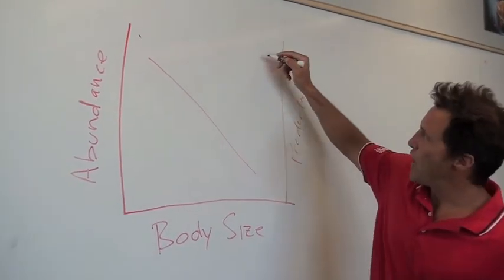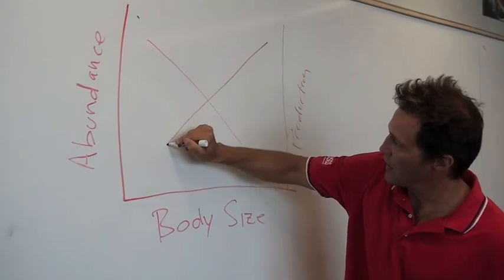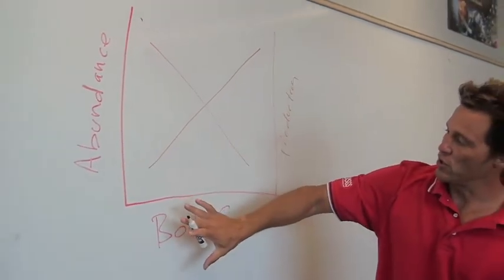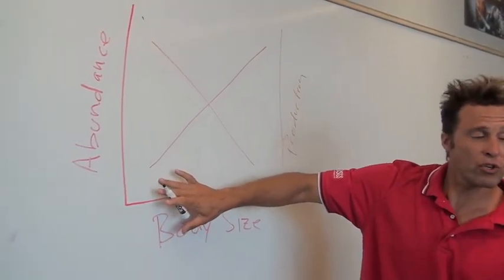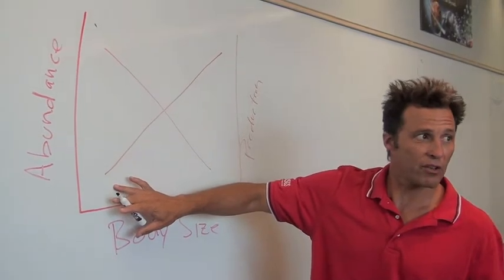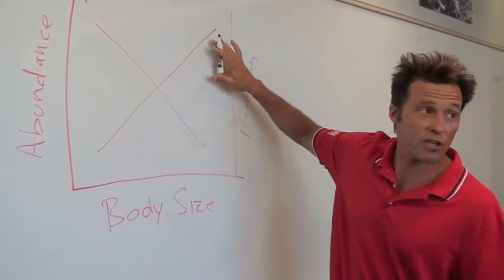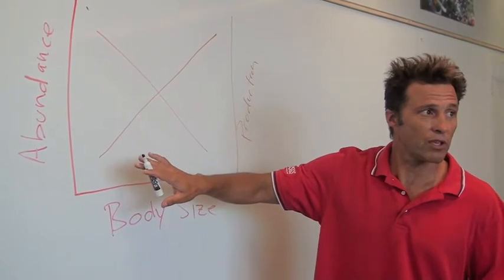If we plot a line, we get a relationship that shows that small-bodied individuals are putting less biomass out in the environment per unit time than large-bodied individuals. And there's a very distinctive slope to that relationship.